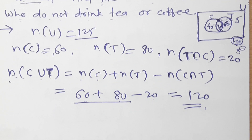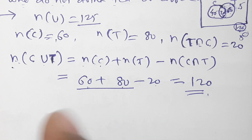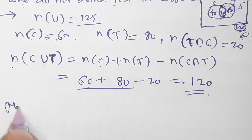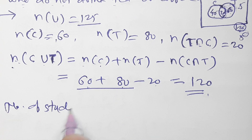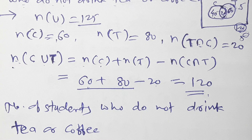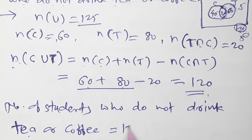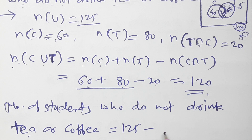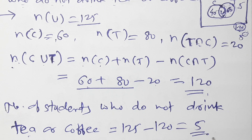Number of students who do not drink tea or coffee = Total minus those who drink at least one = 125 minus 120 = 5 students who do not drink either tea or coffee.